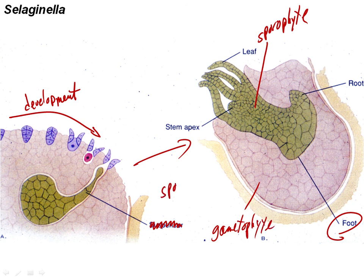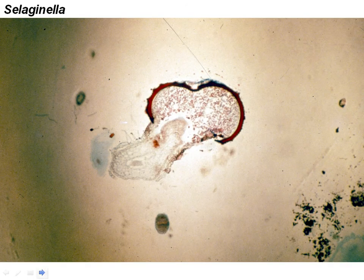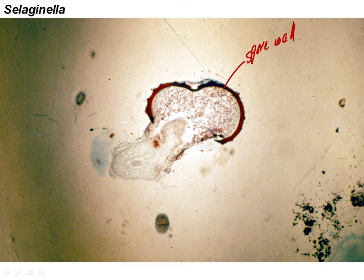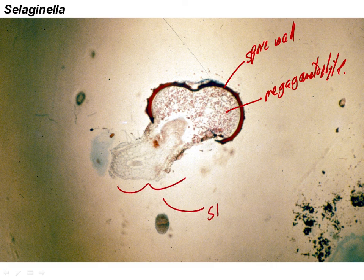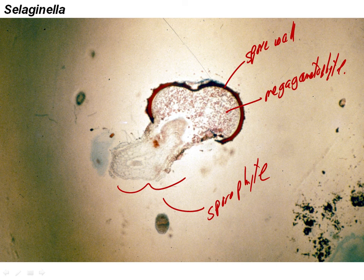Here at a slightly later stage we have a foot where nutrient transfer takes place and the young sporophyte growing out of the gametophyte — with the spore wall surrounding the megaspore in both cases. Here with the spore wall, the megagametophyte, and then the sporophyte growing out.